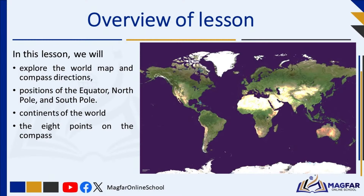In this lesson, we will talk about the world map and compass directions. The world map is like a giant puzzle that helps us understand where places are in relation to each other. It's like a snapshot of our planet. Compass directions are like our navigation tools. They help us figure out which way is which — think of them as your guide to finding your way around.